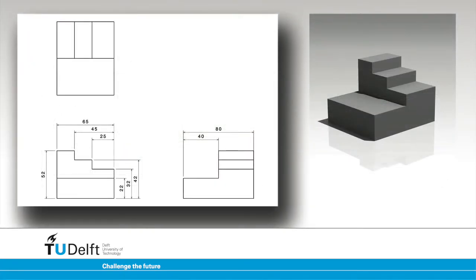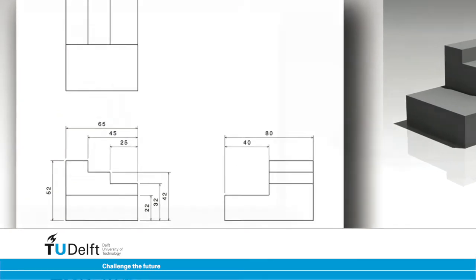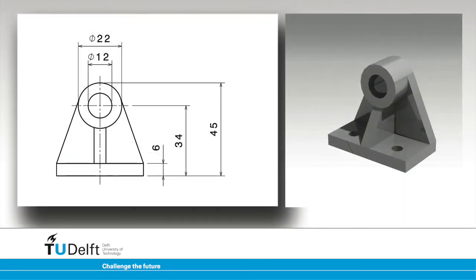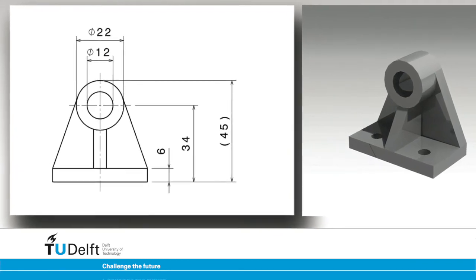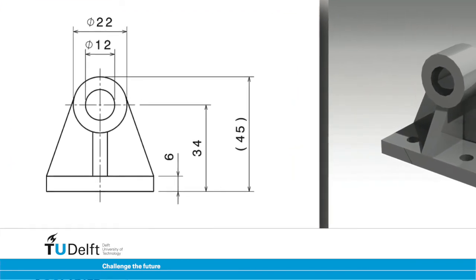All dimensions should only occur once per drawing. If a dimension is given in the front view, it should not be given again in any other view. It is also not allowed to give a dimension which can be deduced by combining other dimensions. In some cases, however, it might be very useful to supply information about an object which is readable at first sight. This kind of dimension is referred to as an auxiliary dimension. The numeral is placed in parentheses to indicate the dimension is already given by a combination of other dimensions.